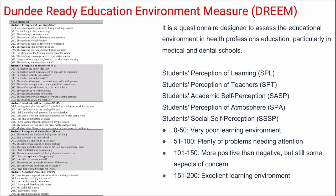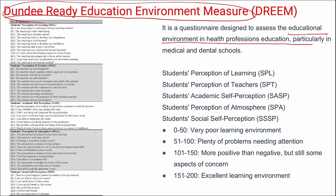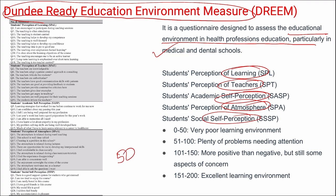Next is DREEM — Dundee Ready Education Environment Measure — which assesses the educational environment in health professions education, particularly in medical and dental schools. It assesses five domains: students' perception of learning, perception of teachers, academic self-perception, perception of atmosphere, and social self-perception. It is a 50-item questionnaire with a minimum score of 0 and a maximum of 200, ranging from very poor to excellent learning environment.